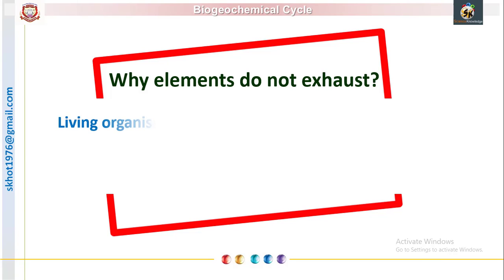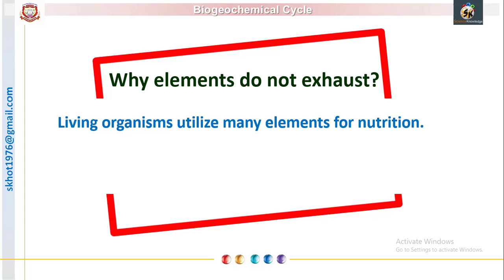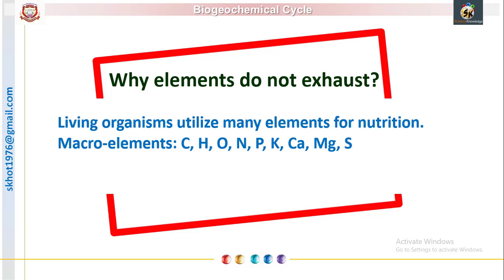Hello friends. We know that living organisms utilize various elements for their nutrition. These elements are classified as macro elements and micro elements. But have you ever wondered why certain elements present in very low concentrations — for example, carbon dioxide, which accounts for only 0.03% of the atmosphere — are used by all plants, all producers on earth for photosynthesis, yet they do not get exhausted over millions of years? The answer lies in the biogeochemical cycle, and today we will deal with that.